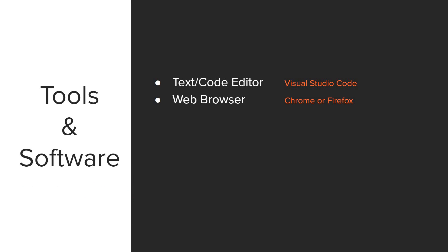Next, you're going to need a web browser. I would recommend Chrome or Firefox — I prefer Chrome. You're also going to need a few editor extensions. VS Code has a lot of extensions, and among the top ones I would recommend are Live Server and Live SASS Compiler, if you're going to be working with SASS. I have a video on my top 10 favorite VS Code extensions as well, and I'll put a link in the description.